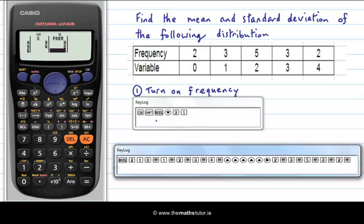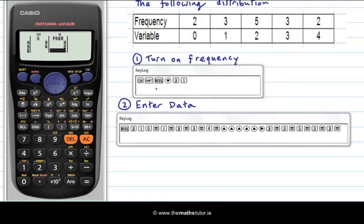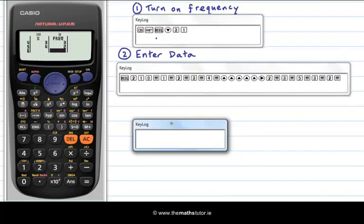So let's just make my key log bigger. And I am going to label this as entering data so that you can see it all there. So now that we have our data entered, the next step is to find out the mean and the standard deviation of this distribution. So let's scroll up here. So we hit AC which is all clear.